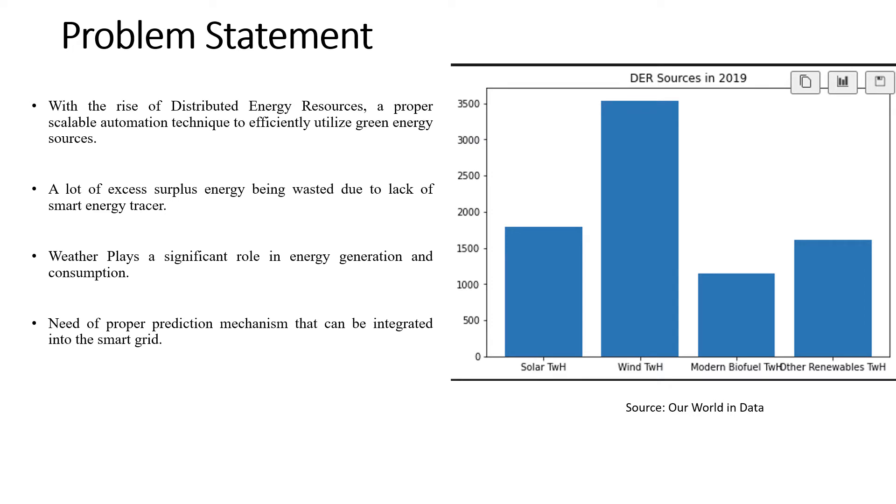So as we know there has been a rise of distributed energy resources all across the world, so there has arisen an opportunity to develop any scalable automation technique to efficiently utilize green energy resources. According to the data from 2019 we can see that these three different distributed energy resources have much greater proportion of the energy generated in terms of terawatt hour and wind energy resources being the highest one. So with the rise of this kind of thing there has been a lot of excess surplus energy that is being wasted due to the lack of proper energy management strategies.